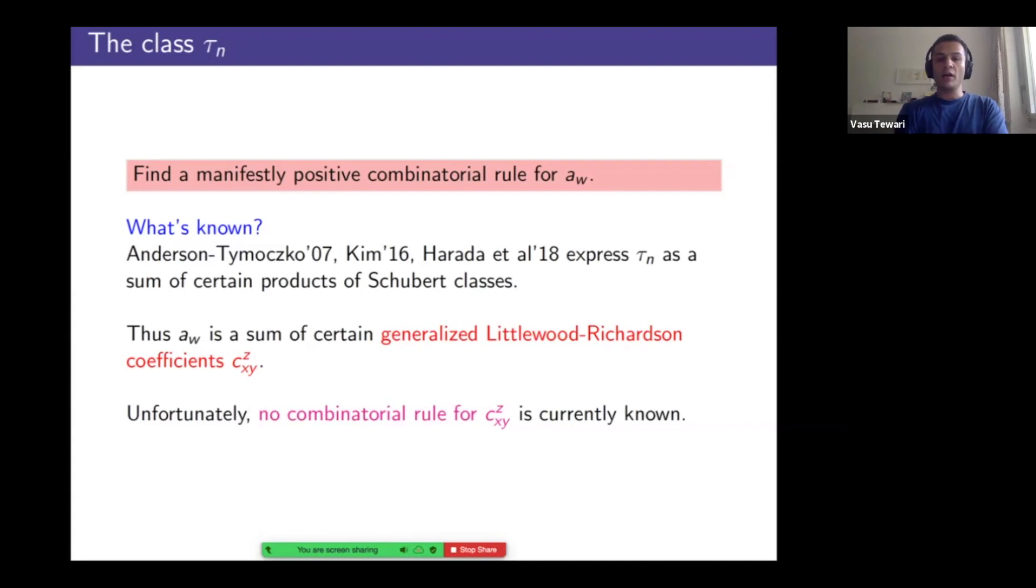All right, so here's the question restated: I want to find a manifestly positive combinatorial rule to compute these a sub w and let me at least give you a sense of where things stood. So Anderson Timarchico already in their 2007 paper expressed this class by way of some over certain products of Schubert classes. So this involves Schubert multiplication. Dong Kwan Kim and Megumi Harada and her co-authors also expressed tau n in the same form as a sum of classes of Richardson varieties. So if you start with their formulation, you can express the a sub w in terms of generalized literal Richardson coefficients, except that computing these guys is hard. So there is some information out there, but not everything is known. So to compute these a sub w, one has to bypass this slightly corny issue. So we have to approach this question via alternative means.